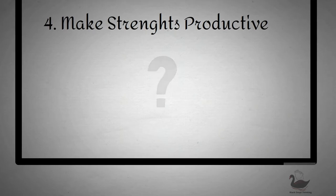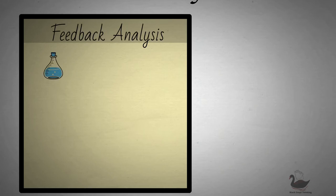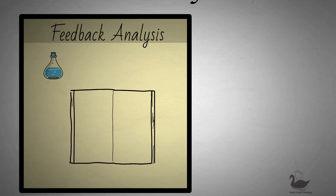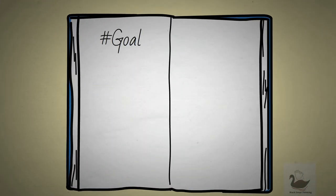Fortunately, Drucker provides a guide as to how you can discover your own strengths. He calls this feedback analysis and the premise is to essentially run a scientific study on your performance of various tasks. You do this by setting a goal of a certain result within a given time period, say six to nine months. After the preset time has elapsed, you will then review if you've fallen short or exceeded this goal.